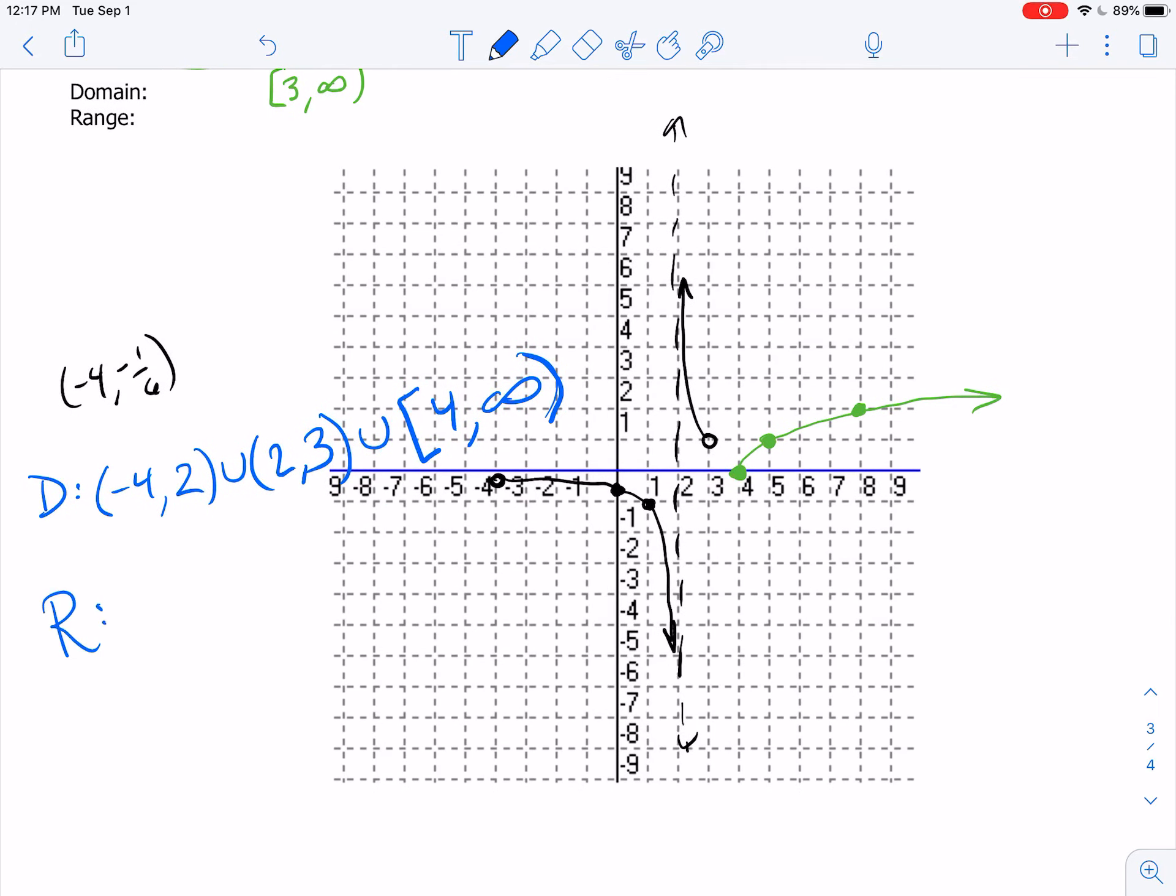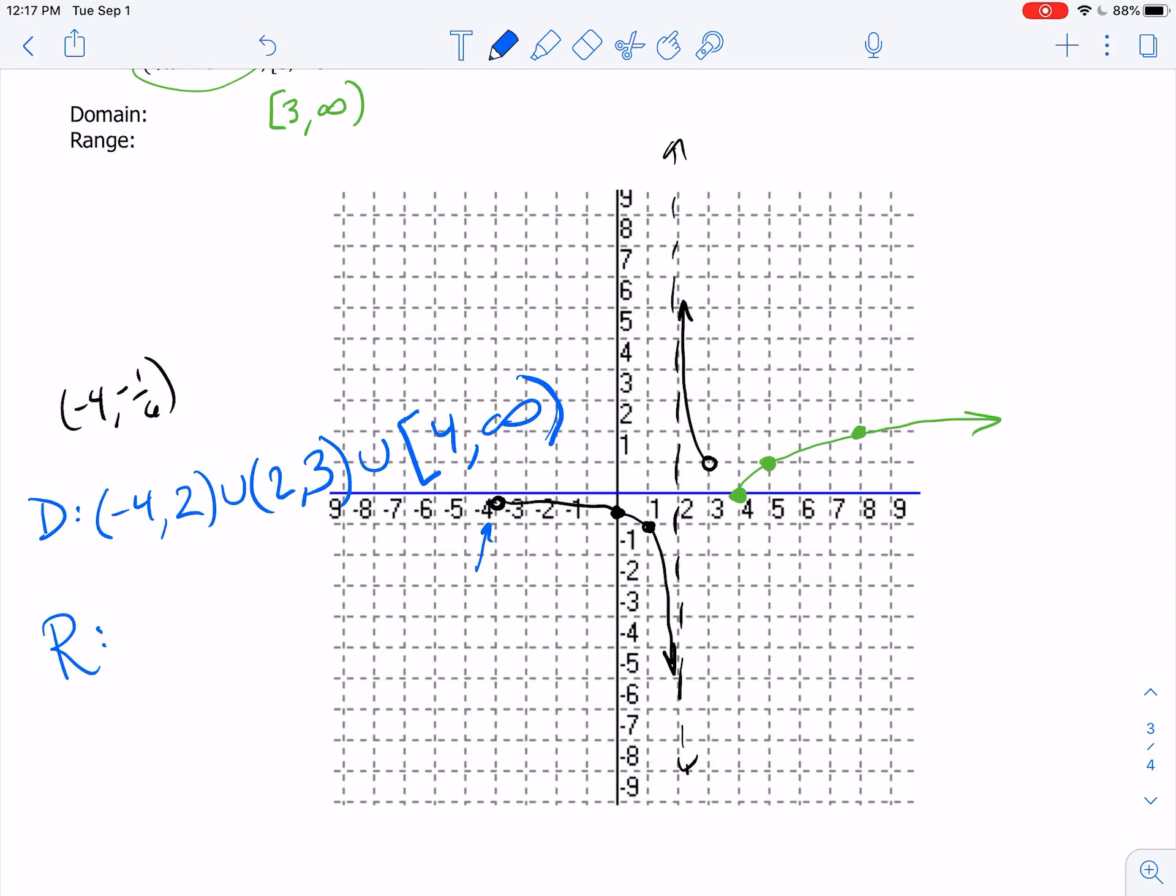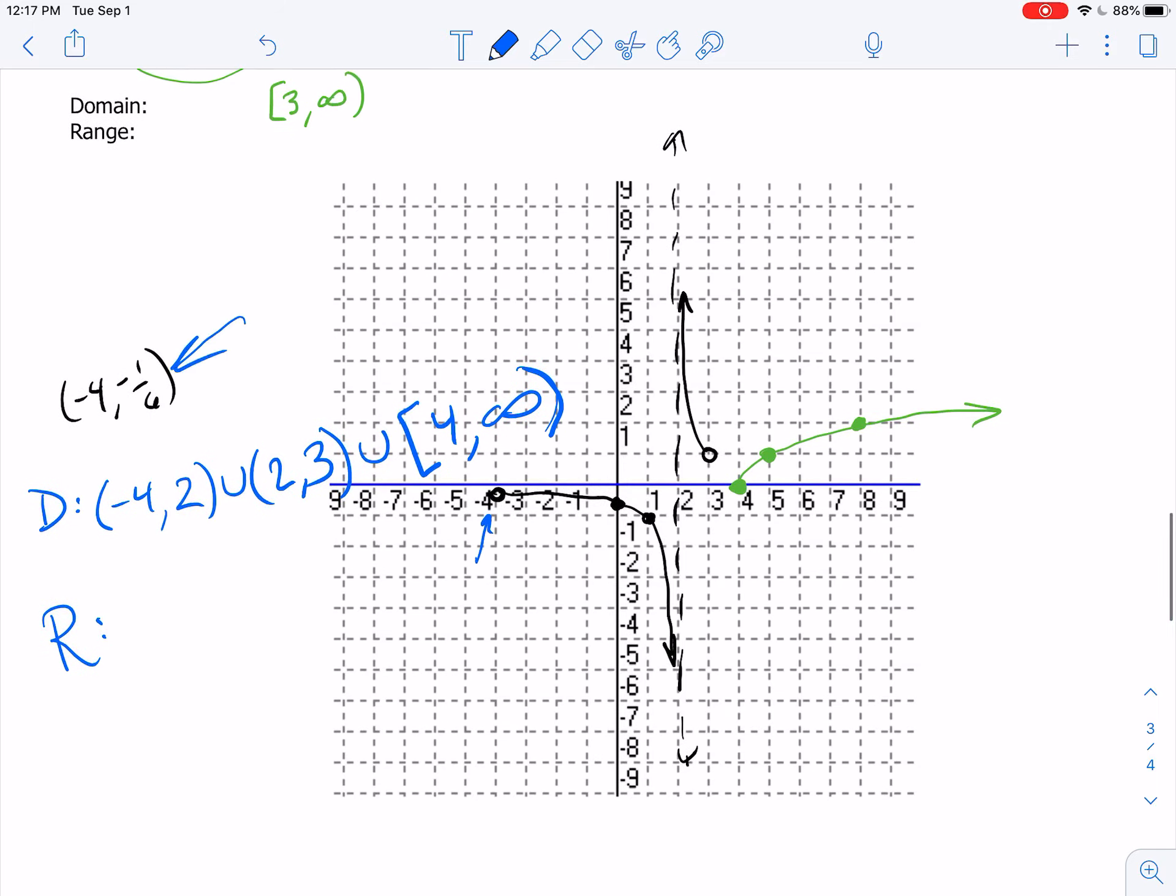The range, let's see, the range goes from negative infinity up to this point right here, which we said was this. So the range goes from negative infinity to negative 1 sixth. It does not include that because it's an open circle. Then we pick it up again and we go from 0 to infinity. It does include 0. That's a hard bracket there. So it goes from 0 to infinity. So hopefully that was helpful. Let me know if you have additional questions.